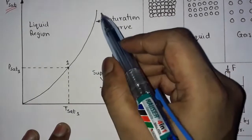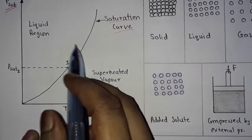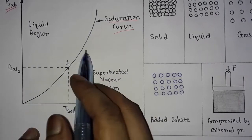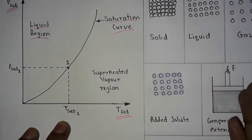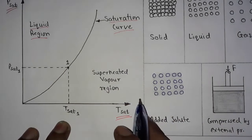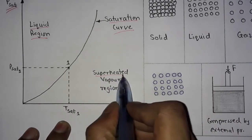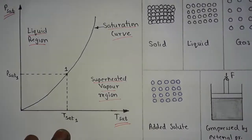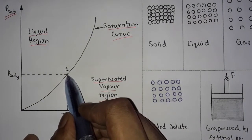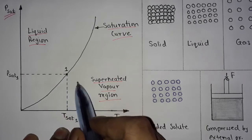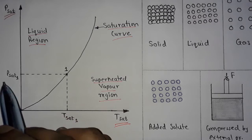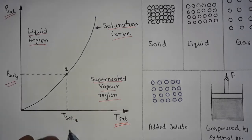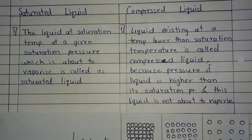This is a saturation curve. On the left side of this saturation curve there is a liquid region, and on the right hand side there is a superheated vapor region. This is a point of saturated liquid, which is at P-sat 1 saturation pressure and at T-sat 1 saturation temperature.